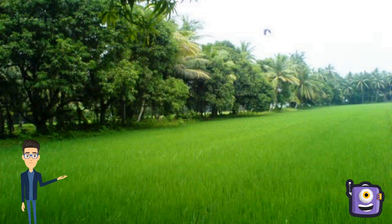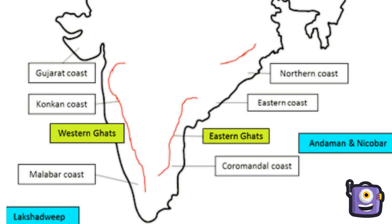To the west of the Western Ghats and east of the Eastern Ghats lie the coastal plains. The western coastal plains are very narrow compared to the eastern coastal plains. These were formed due to sediments brought down by the peninsular rivers and the erosional and depositional activities of sea waves. The western coastal plains are divided into three parts: the northern Konkan coast, the central Kannad coast, and the southern Malabar coast. The eastern coastal plains are divided into two parts: the northern Sarkar coast and the southern Coromandel coast.